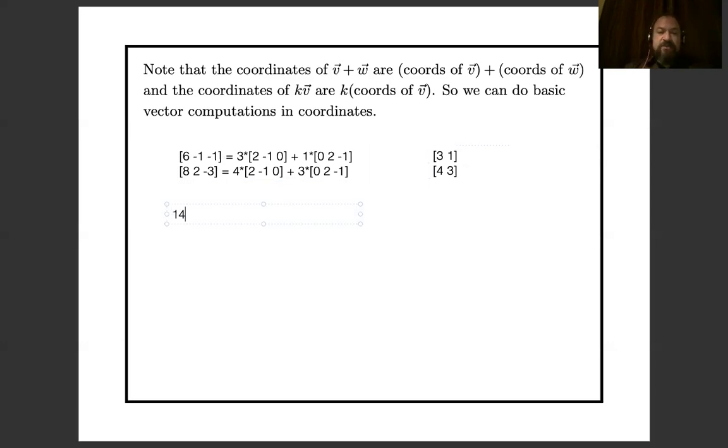If I add them together, then I get (14, -2, -4). If I add these two vectors together in coordinates, I get (7, 4). And sure enough, (14, -2, -4) does indeed equal 7 times (2, -1, 0) plus 4 times (0, 2, -1). So the sum written in coordinates is the sum of the coordinates.